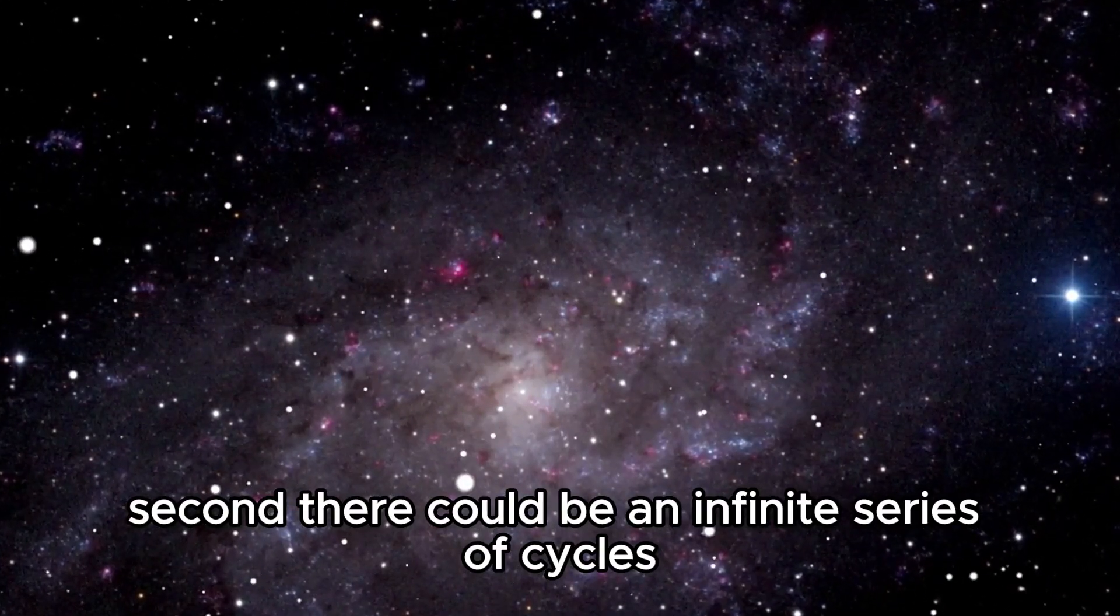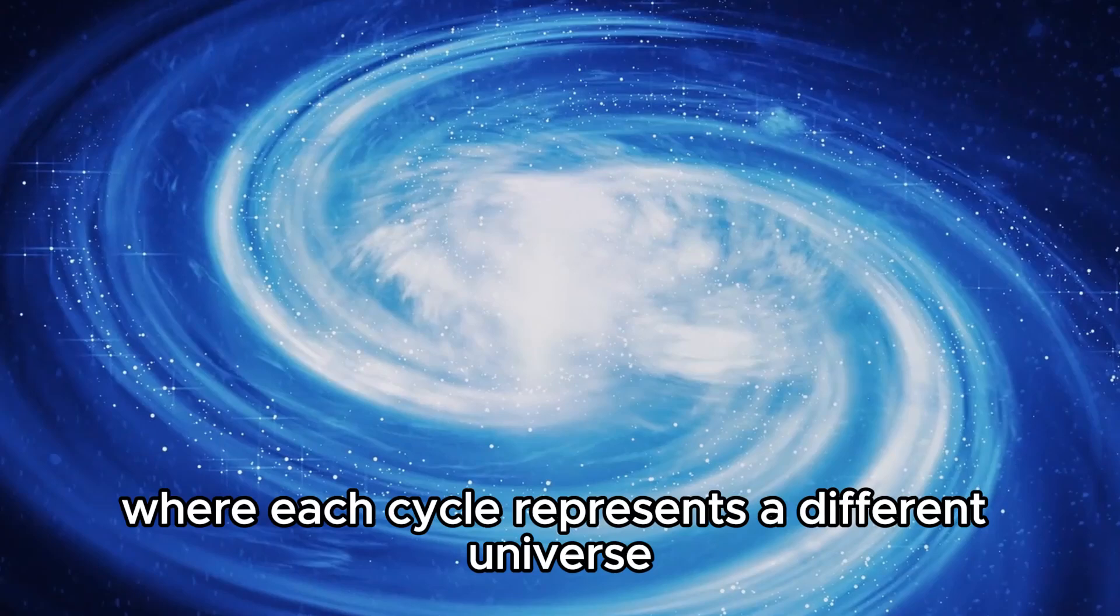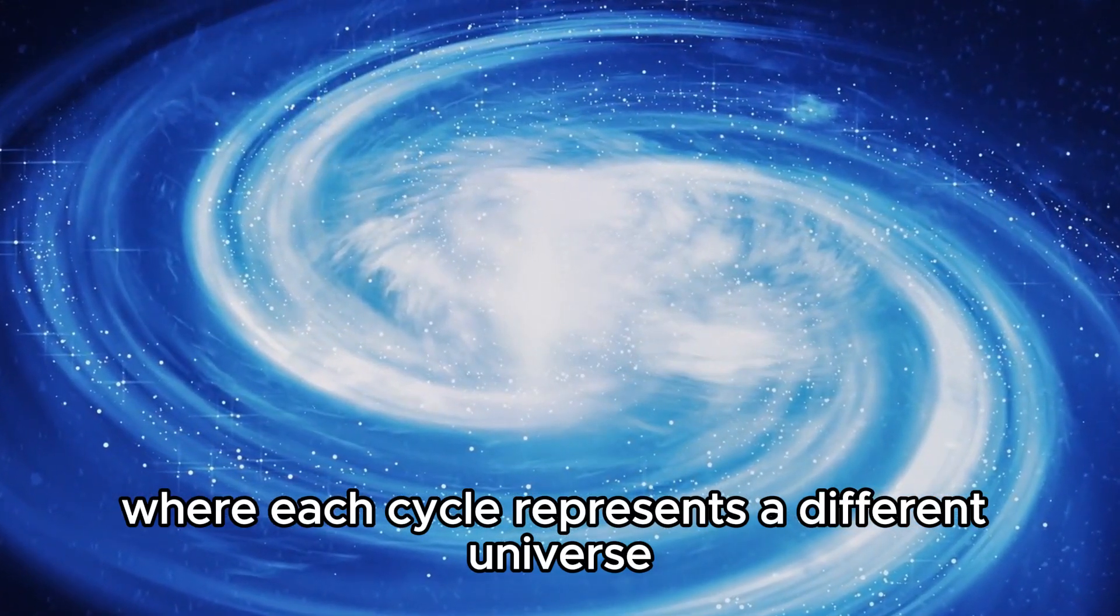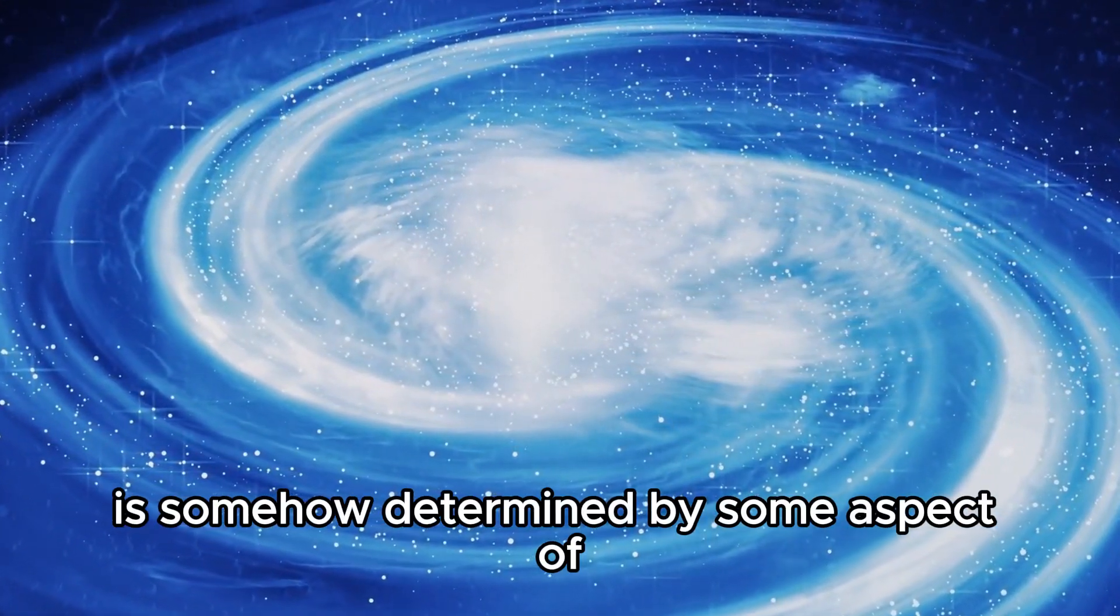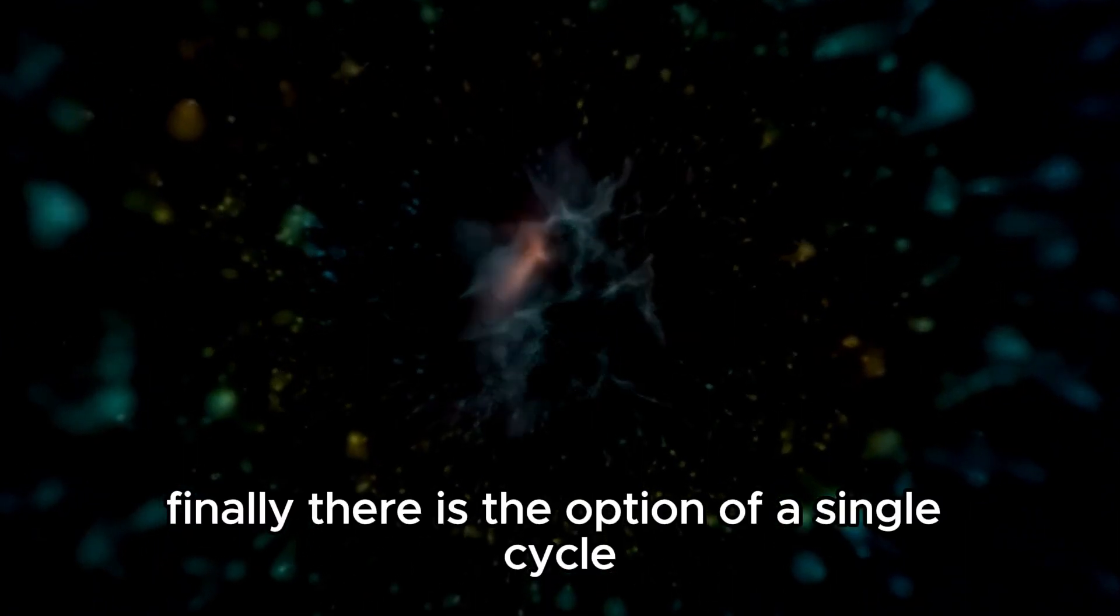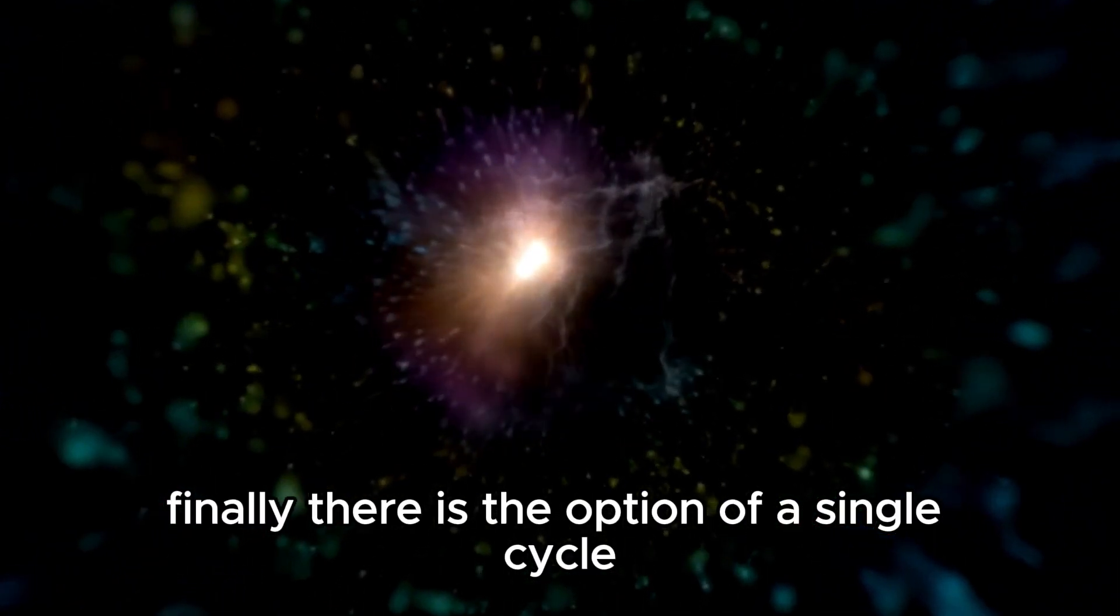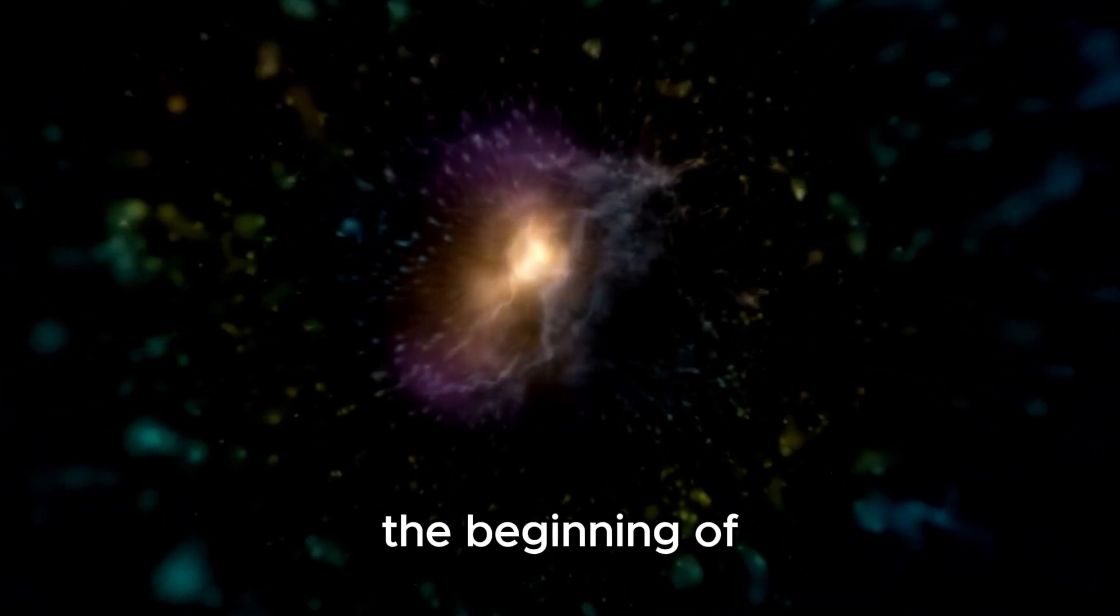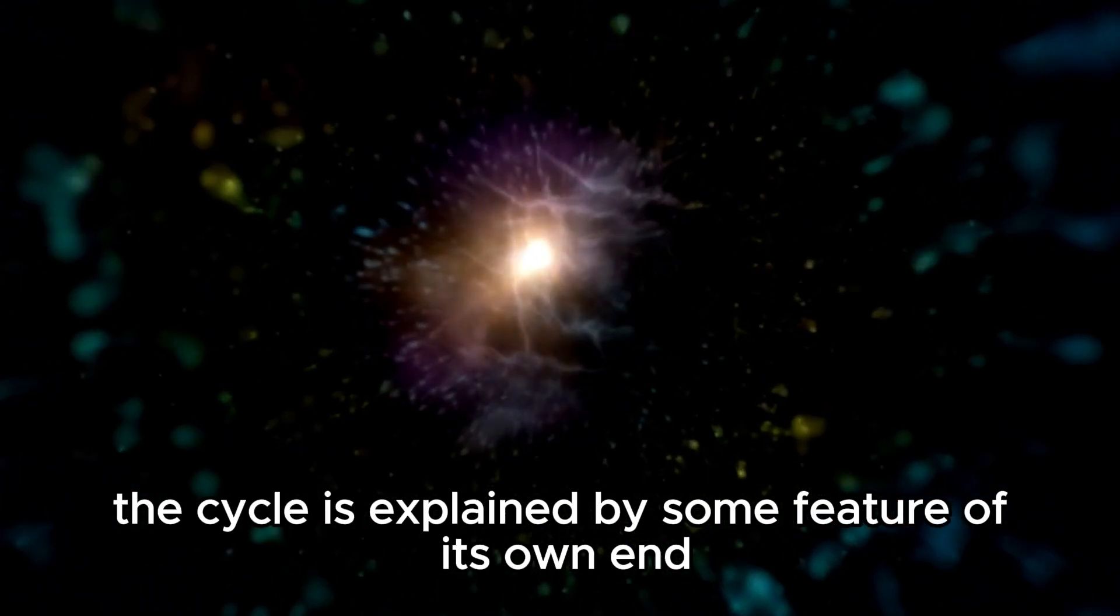Second, there could be an infinite series of cycles where each cycle represents a different universe, and the initial quantum state of each universe is somehow determined by some aspect of the universe that preceded it. Finally, there is the option of a single cycle in a repeating universe where the beginning of the cycle is explained by some feature of its own end.